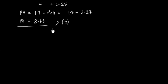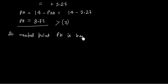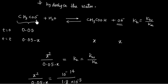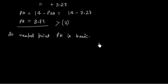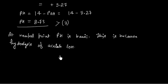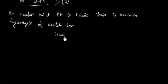At the neutral point — or equivalence point — the pH is basic because of the hydrolysis of acetate ion. So whenever we have a weak acid plus strong base titration, at the equivalence point the pH will correspond to the basic region.